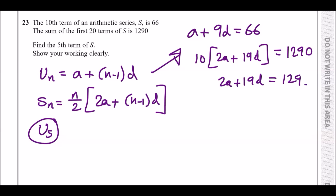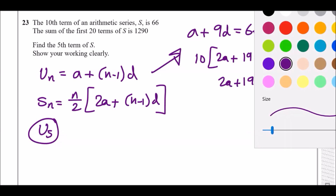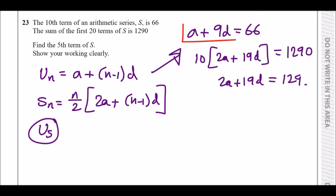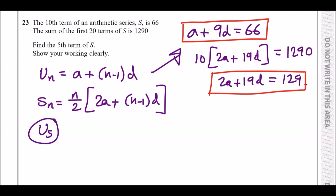We now have two simultaneous equations. To eliminate a, double the first equation: 2a plus 18d equals 132. Then subtract this from 2a plus 19d equals 129. Subtracting gives d equals negative 3.